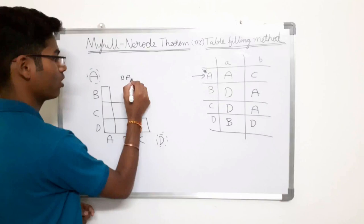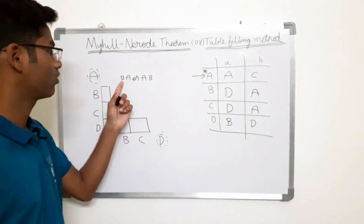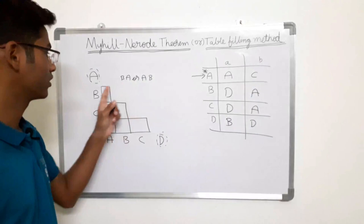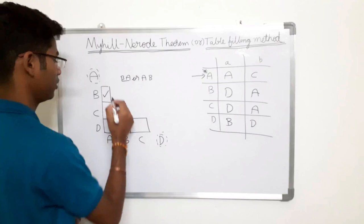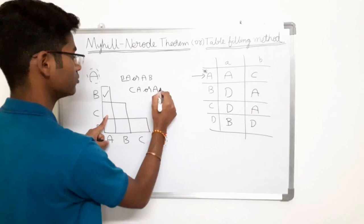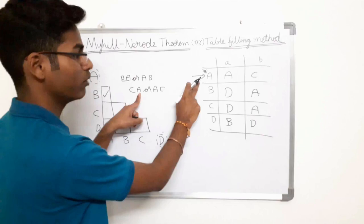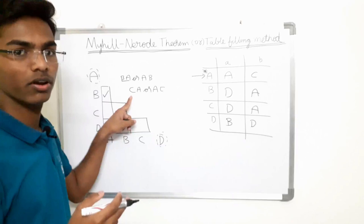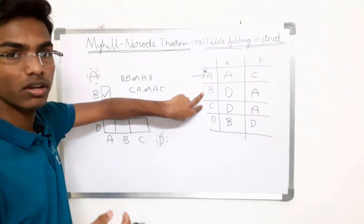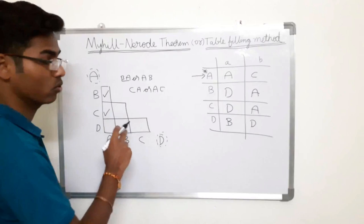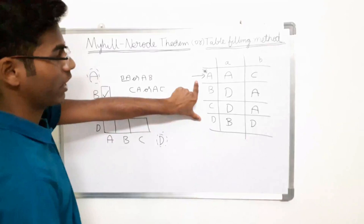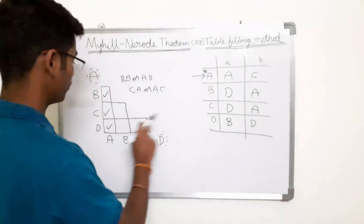Step two says: if any one state belongs to the final state and the other does not, then mark that cell. Consider cell B,A — B is a non-final state and A is a final state, so mark B,A. For C,A — C does not belong to the final state and A does — so mark C,A. For C,B — both are non-final states, which fails the condition, so leave it. For D,A — A belongs to the final state and D does not, so mark it.